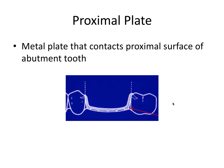Next let's talk about the proximal plate, another component of the framework. It's a metal plate that contacts the proximal surface of an abutment tooth. You can see the netting or meshwork holding the denture teeth and acrylic in the bounded edentulous space, and the vertical components contacting the mesial surface of the molar and the distal surface of the premolar are the proximal plates. Importantly, the proximal plate is technically a type of minor connector, and it's a very specific type that contacts proximal surfaces of the abutment tooth.